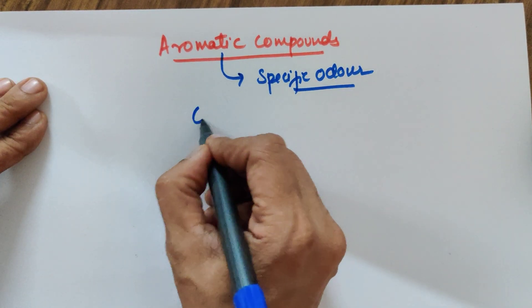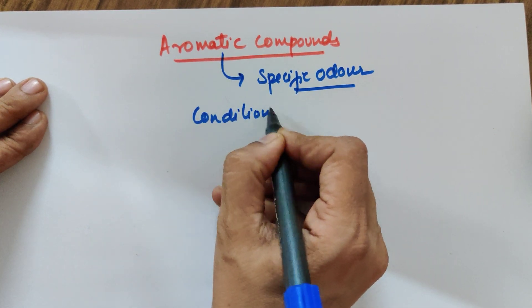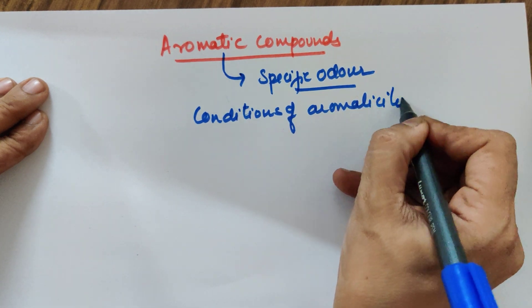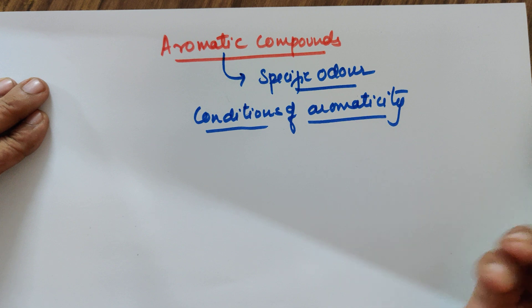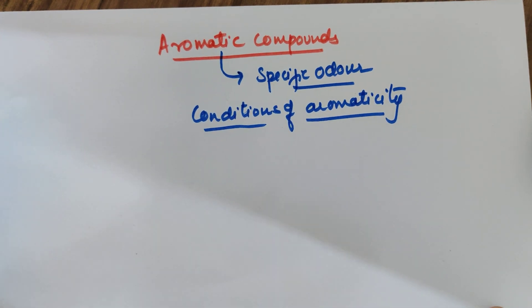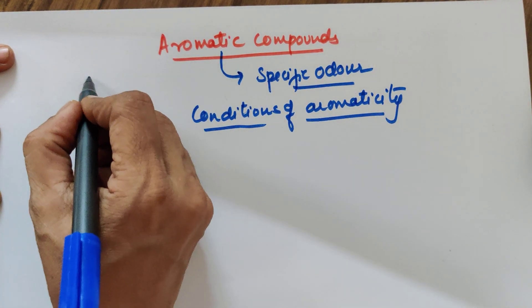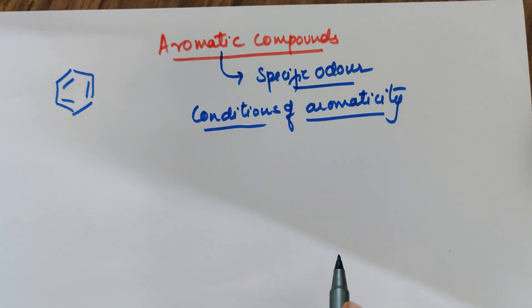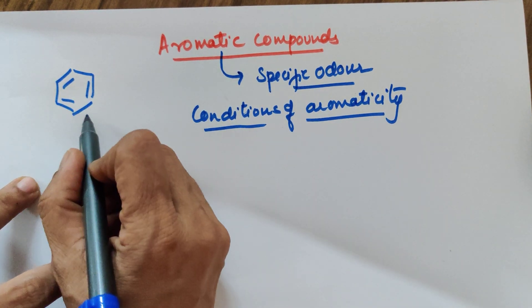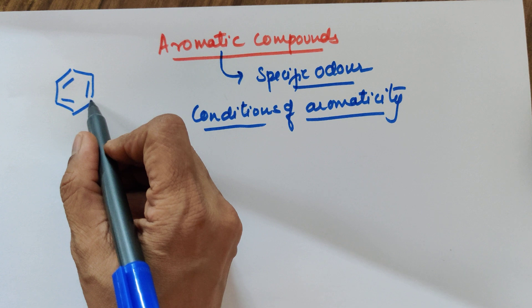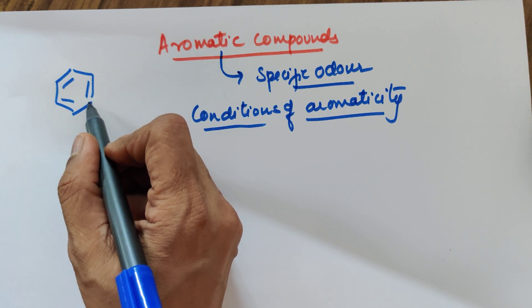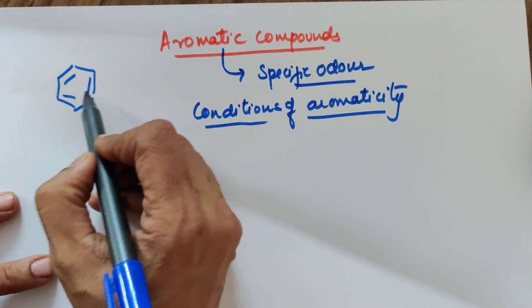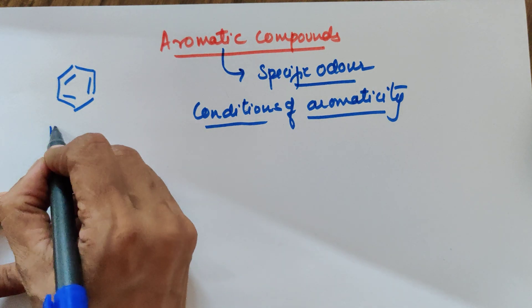Later on, specific conditions were established for a compound to be called aromatic — these are the conditions of aromaticity. The first compound you already know that can be classified as aromatic is benzene. What is so specific about benzene? It is cyclic, all carbons have a double bond, meaning their hybridization is sp2, and it is a closed ring compound with three pi bonds.